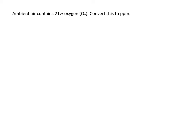In this example, we're going to work in percentages. Here ambient air contains 21% oxygen, O2. Convert this to ppm. So using method one, we're going straight from percent to ppm. So we know that we have percent, and we want to cancel that out, so that needs to go in the denominator. We want to go to ppm in the numerator.